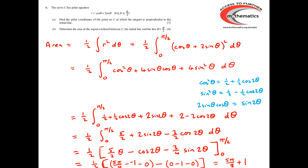The marking on this question: three marks for realising that dx/dθ = 0, finding dx/dθ, and equating to zero; then four marks for solving the equation and finding the value of r. For the second part, a method mark for stating the area formula ½r² dθ, an answer mark for expanding r², two marks for converting to the 2θ format, a mark for correctly performing the integration, and a final answer mark.